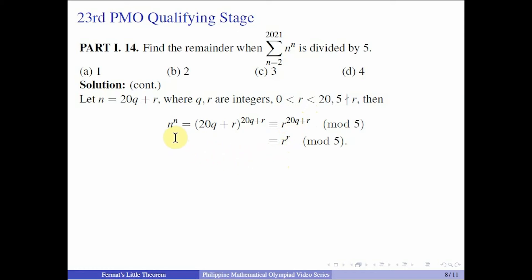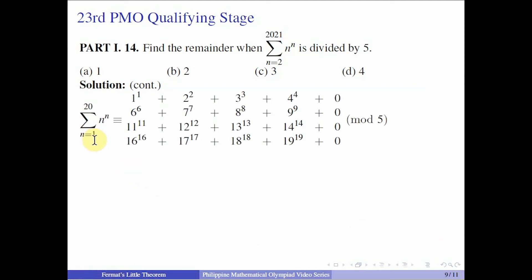That means that we know that, let's say, n^n is 23^23, then it should just be the same as 3^3, and so with 43^43, and so on and so forth. That means that if we group together the sum from 1 to 20, then it should be the same as 21 to 40, and then 41 to 60, so on and so forth. We can just look at the sum of the first 20.